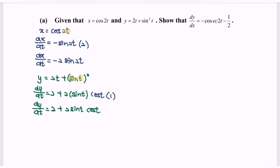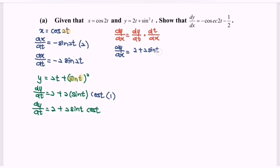Next, substitute into dy/dx, where dy/dx equals dy/dt multiplied with dt/dx. So dy/dx equals 2 plus 2 sine t multiplied with cos t, over — remember to flip the situation — negative 2 sine 2t.